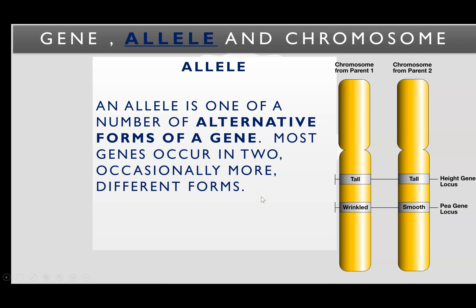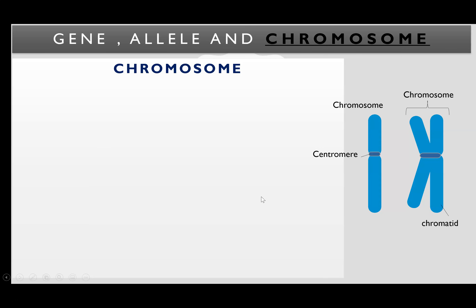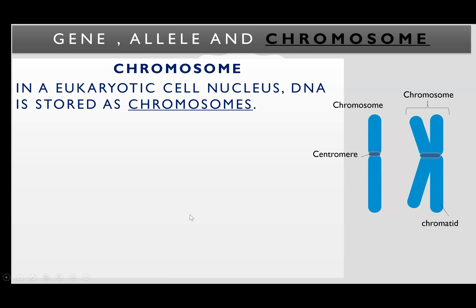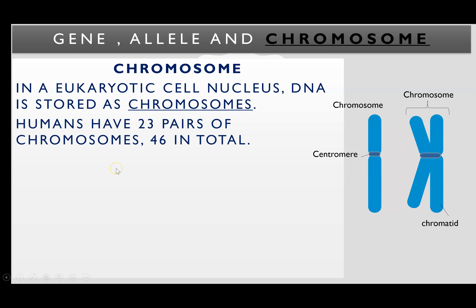Lastly, chromosomes — that is how DNA is stored. A chromosome is tightly coiled DNA, and in eukaryotic cells, chromosomes are located in the nucleus. In humans, in our somatic cells — the body cells, not the gametes (sperm or egg) — we have 23 pairs of chromosomes. So in total there will be 46 chromosomes in each of our body cell nuclei.